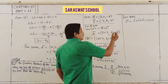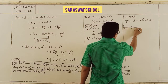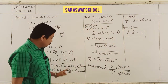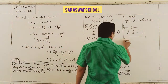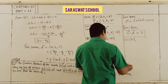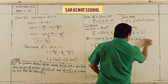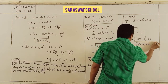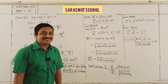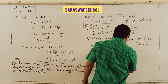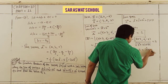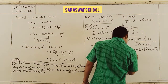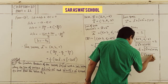So (1·(2 + λ) + 1·6 + 1·(−2)) / √(λ² + 4λ + 44) = 1, which simplifies to (λ + 6) / √(λ² + 4λ + 44) = 1.